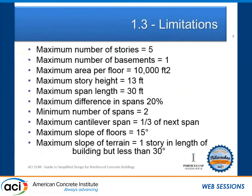This book has some limitations — it's for standard buildings. If the structure is a summer dream for the architect, this book will not comply. It's up to five stories with an additional basement. Maximum area is 10,000 square feet, story height 13 feet, maximum span 30 feet, with up to a 20% difference between spans, and a minimum of two spans. All these rules exist because there's a lot of simplification in the process, so certain redundancy is needed.